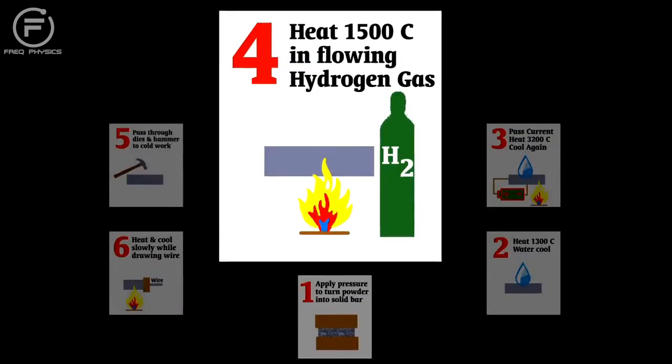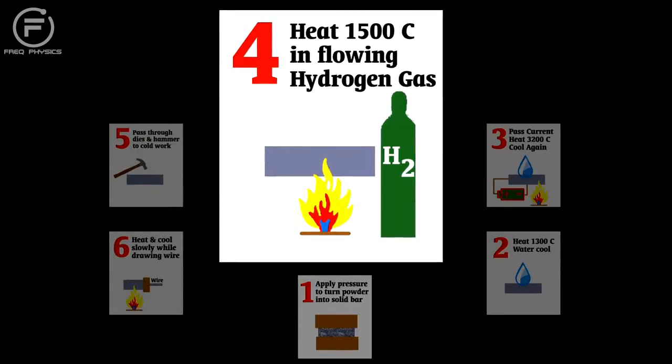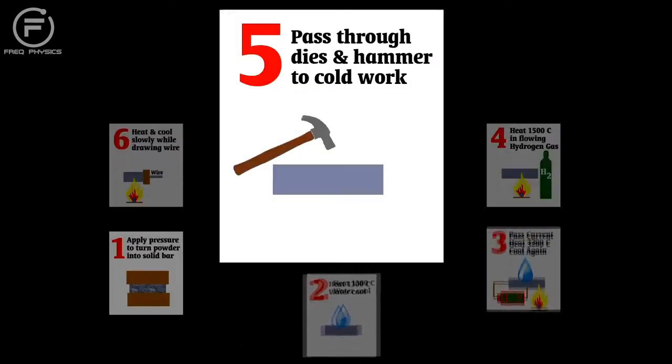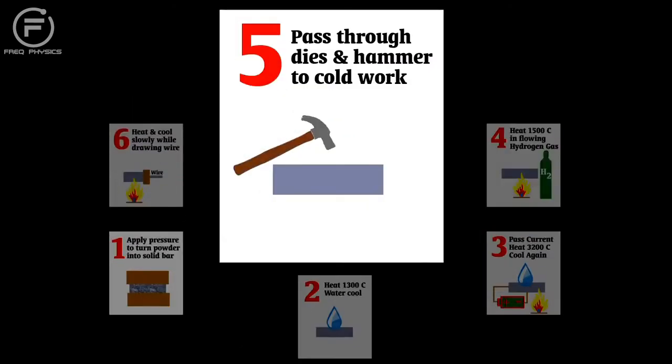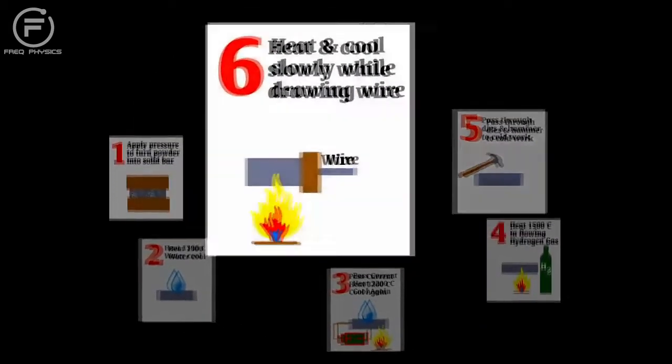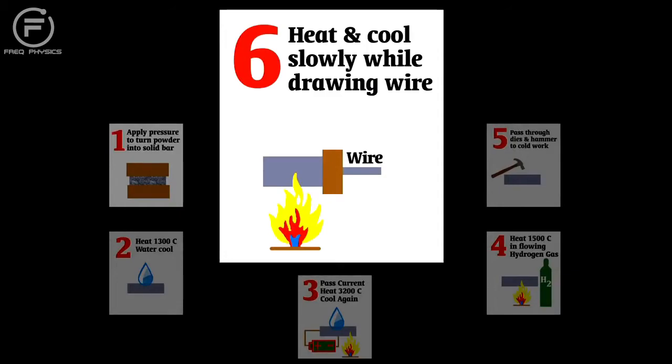Four, heat yet again to fifteen hundred degrees Celsius, but this time while flowing hydrogen over it. Five, pass it through a series of dies to cold work it and then hammer it. And then the sixth and final step, heat it and then reduce the temperature gradually while drawing it into a one millimeter diameter wire.